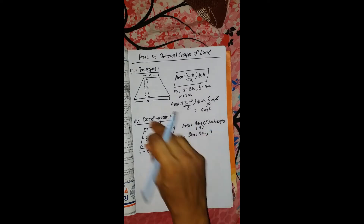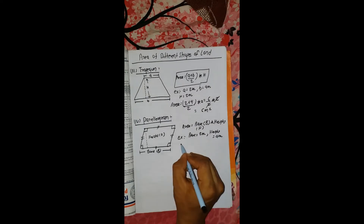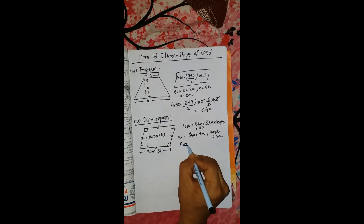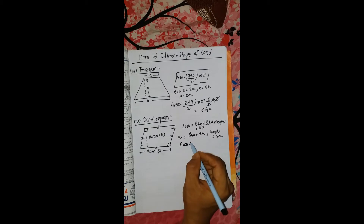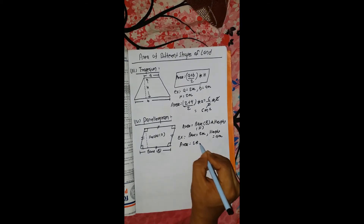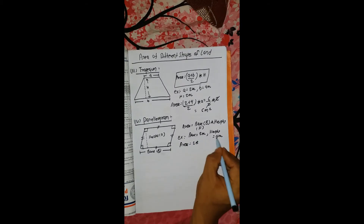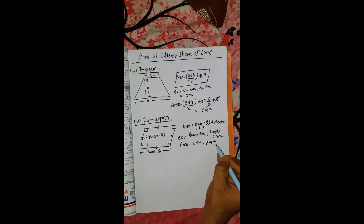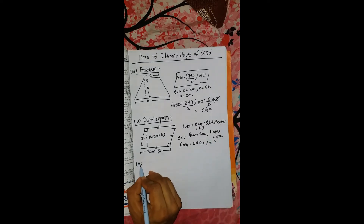For example, base B is equal to 2 meters and height is equal to 5. So the area works out accordingly.